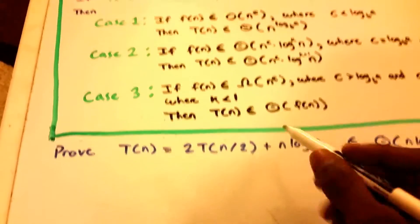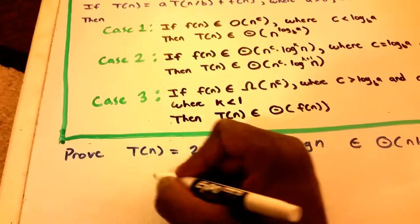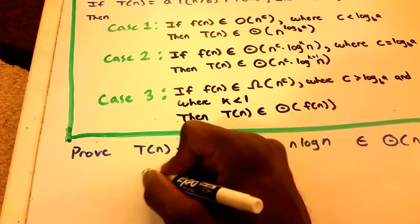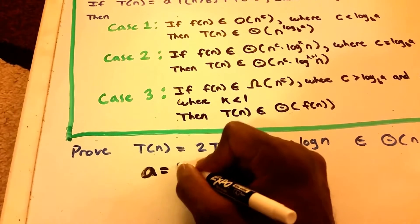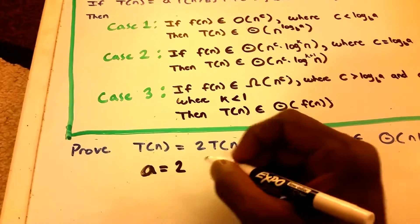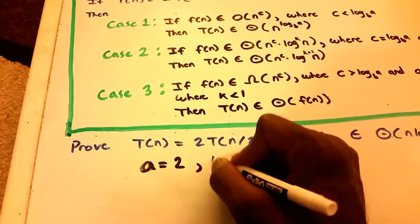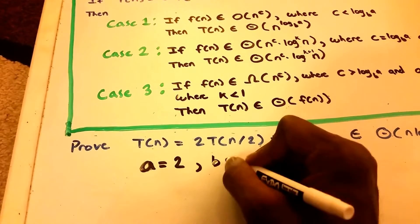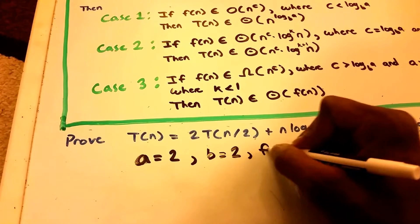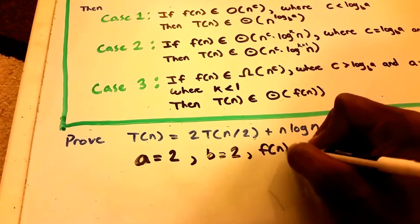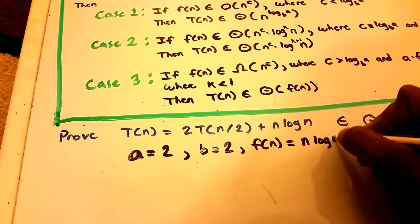We can see that this recurrence is in the form of the master theorem. So our A is equal to 2, our B is equal to 2 as well, and our function of n is equal to n times log n.